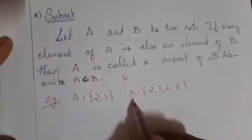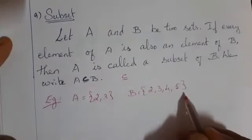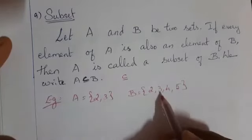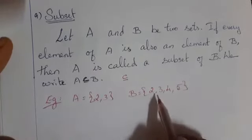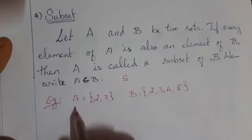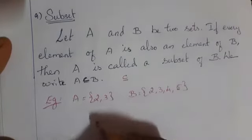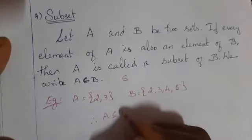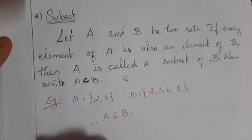Check set B — in B you have 2, 3, 4, 5. Both 2 and 3 are present in capital A. Therefore, A is a subset of B. One more example: the set {1} is a subset of {1, 2, 3}.